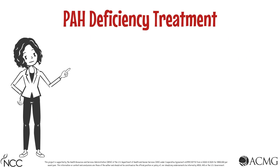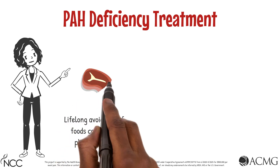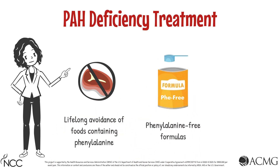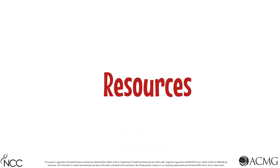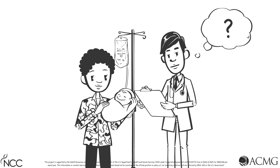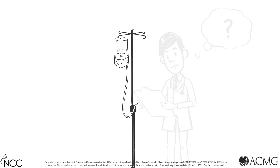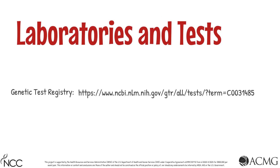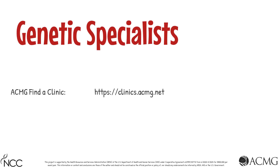PAH deficiency is primarily treated through the avoidance of foods containing phenylalanine throughout the lifetime, the administration of phenylalanine-free formulas, and medications that help the body process phenylalanine. As you continue to care for your patient with PAH deficiency, here are some resources where you can obtain information on PAH deficiency, appropriate laboratories and tests, and genetic specialists.